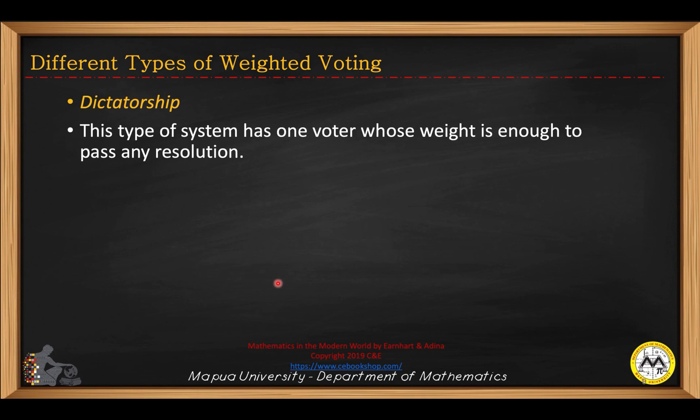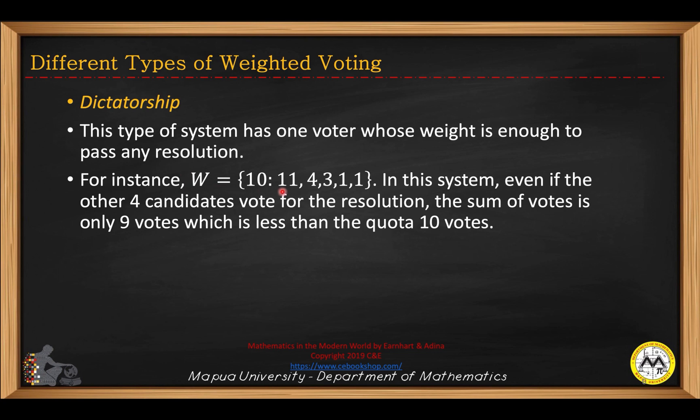For dictatorship, the system has one voter whose weight is enough to pass any resolution. For example, here we have the minimum quota is 10, and then there is one voter who has a weight of 11. So in this system, even if the other four candidates vote for the resolution, the total is only seven plus two, so nine votes. The sum of votes is less than the quota, which is 10. So this particular voter is a dictator.